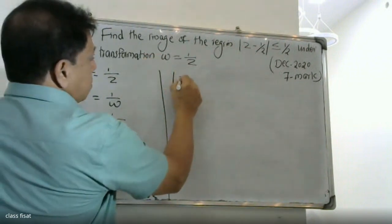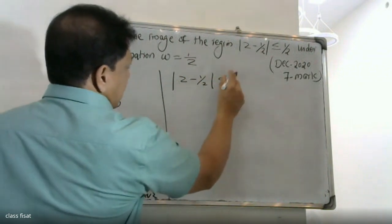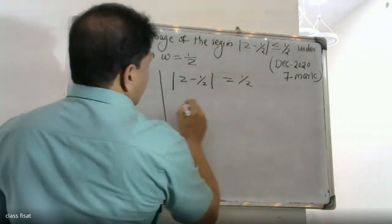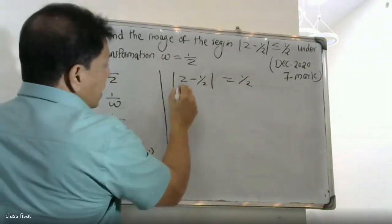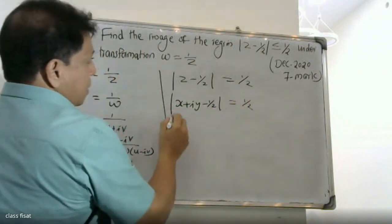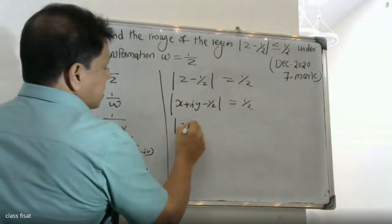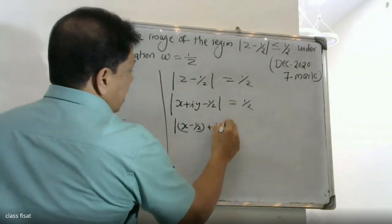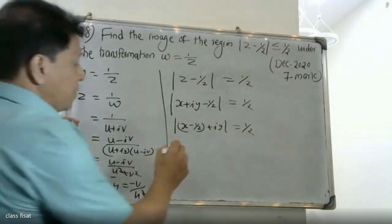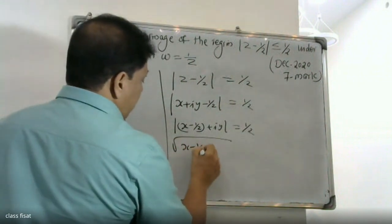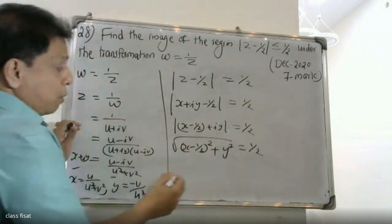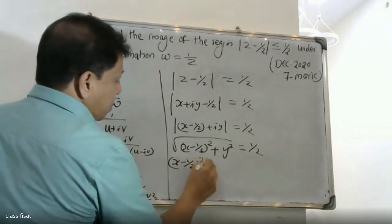Now substitute into the condition: mod(z + 1/2) less than or equal to 1/2. This means the modulus of (x + iy + 1/2) is less than or equal to 1/2, i.e., the square root of (x + 1/2)² + y² is less than or equal to 1/2. Squaring both sides: (x + 1/2)² + y² is less than or equal to 1/4.